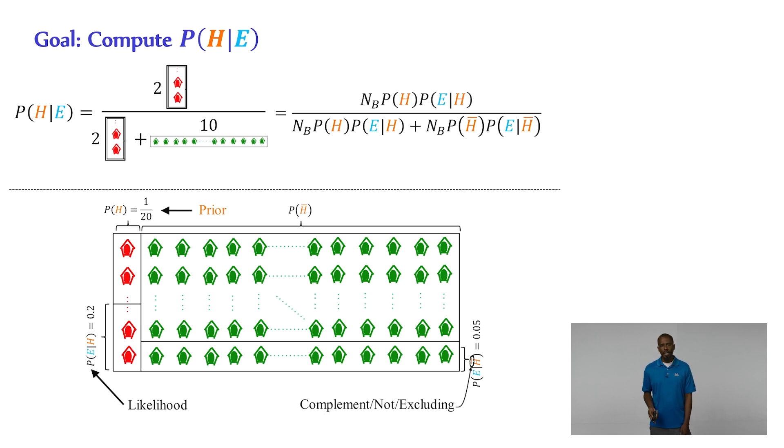In the denominator, we have the same number as the numerator, but we need to add in the rest, which is the number of buildings that are not pre-code or the number of code-conforming buildings times the probability of the evidence or collapse given a code-conforming building.